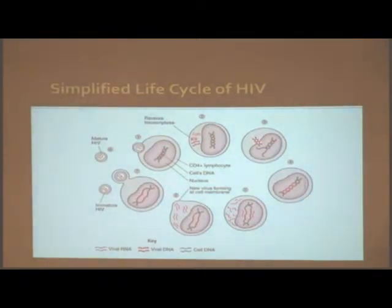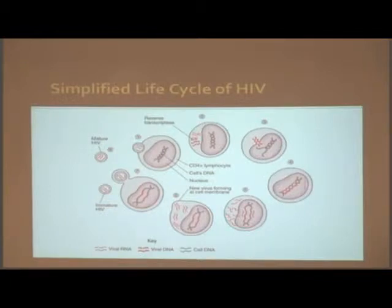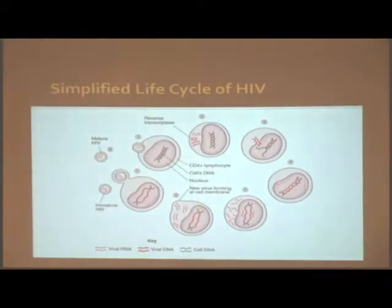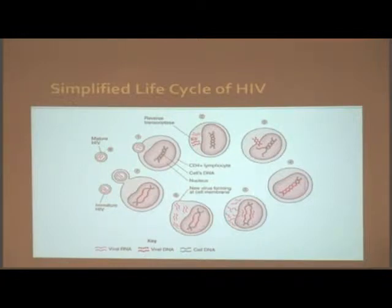For the virus to replicate, the RNA must be converted to DNA. The RNA is converted by an enzyme called reverse transcriptase. HIV mutates easily at this point, because the reverse transcriptase is prone to errors during the conversion of viral RNA to DNA.